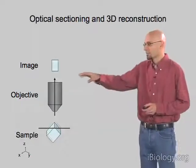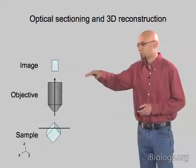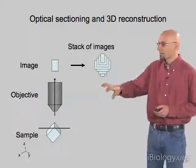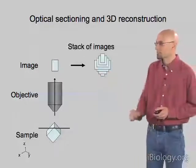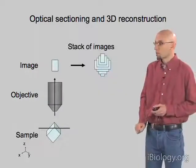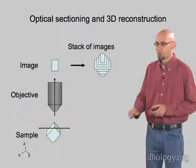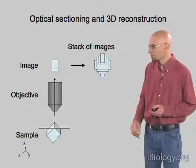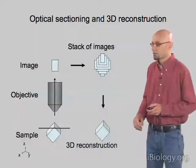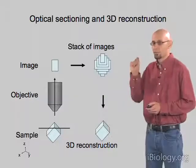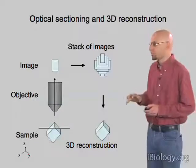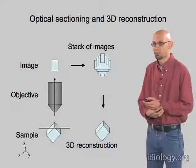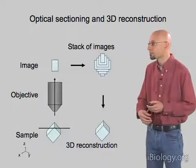And we can keep doing this, getting slices through different parts of this object. Then we get, as I showed before, a stack of these images where we can now, in the computer, assemble these into a three-dimensional structure. And now we can look through that at different angles to generate a three-dimensional reconstruction of how this would look as viewed from different angles.